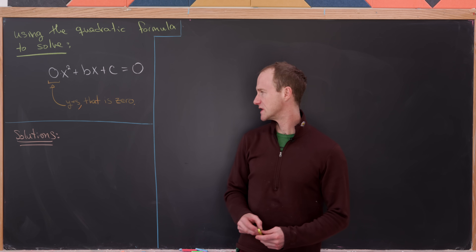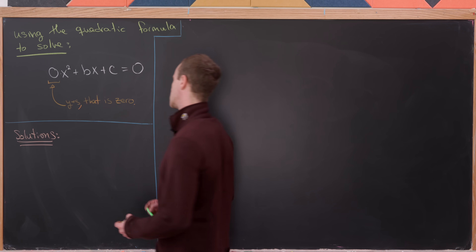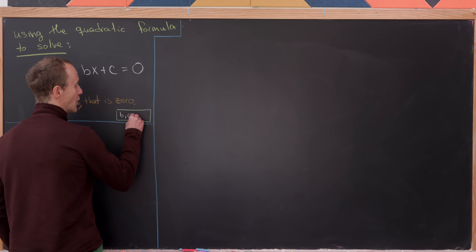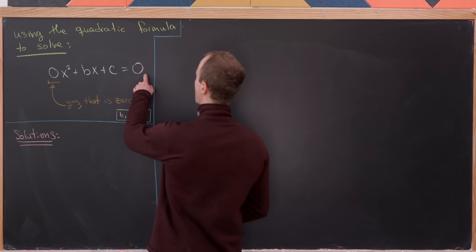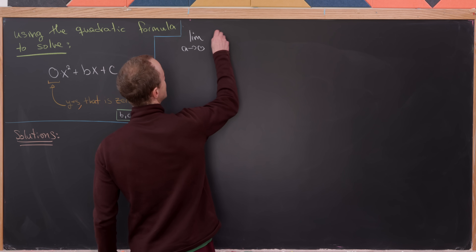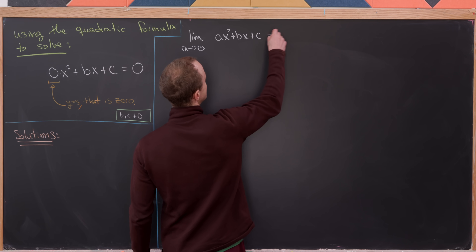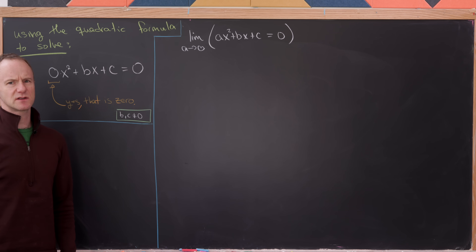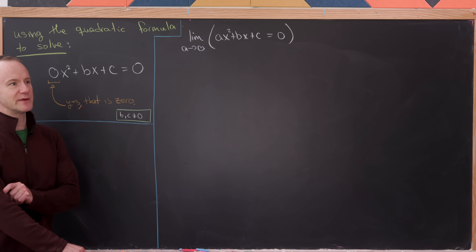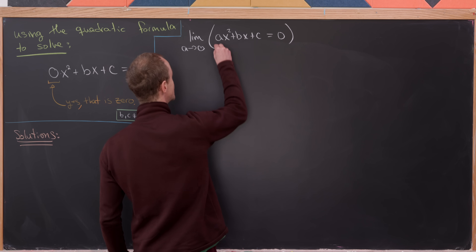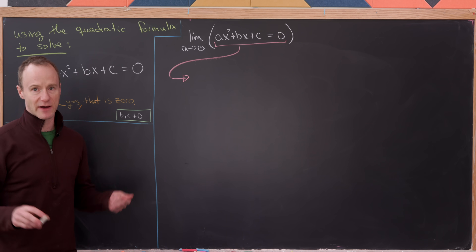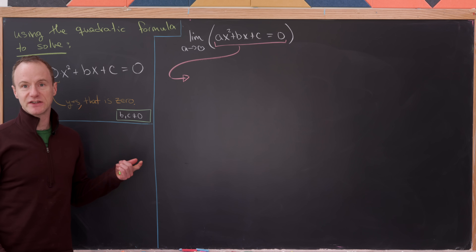So how can we approach this? I'd like to simplify the setup a little bit by saying that let's take b and c both to be non-zero. So I can think about this equation as the limit as a approaches 0 of the equation ax² plus bx plus c equals 0. What we should really be talking about is the limit of the solutions to this equation. Since we're taking the limit as a approaches 0, that means a is never 0.